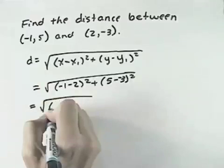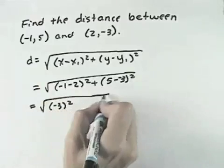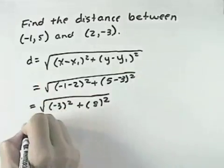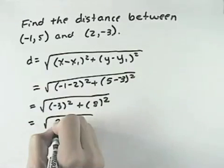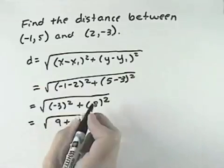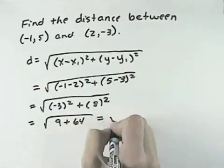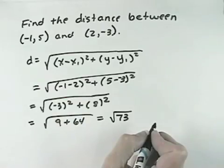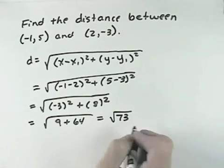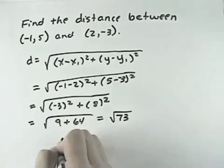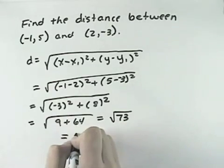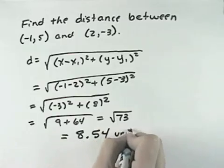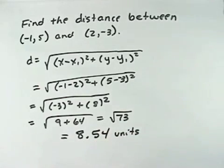That will give me the square root of -3 squared plus 8 squared. That's the square root of 9 plus 64. Adding that together, that's the square root of 73. And then if necessary, we want to round the answer to two decimal places. So if I did the square root of 73 on my calculator, I'd see that that's equivalent to 8.54 units, as the distance between those two points.